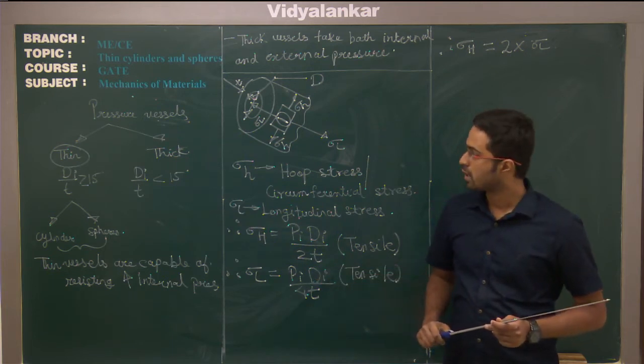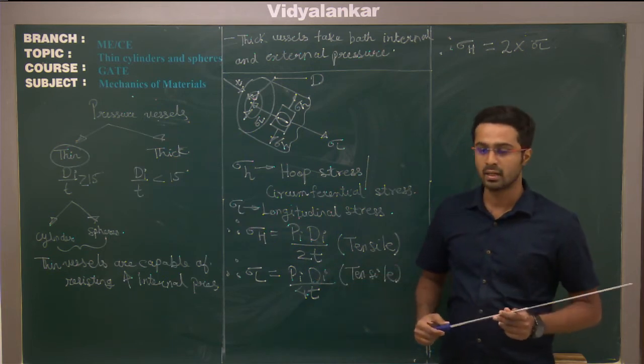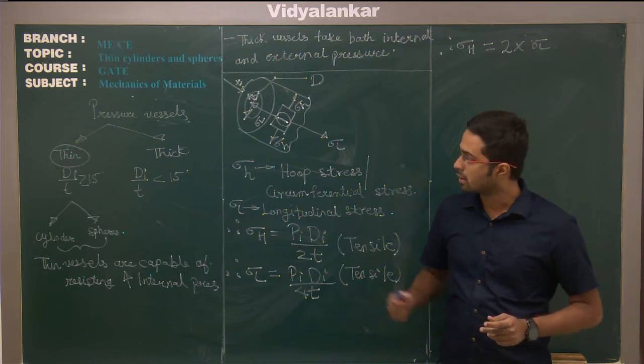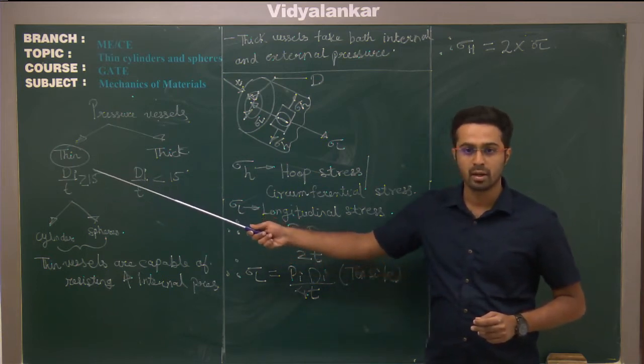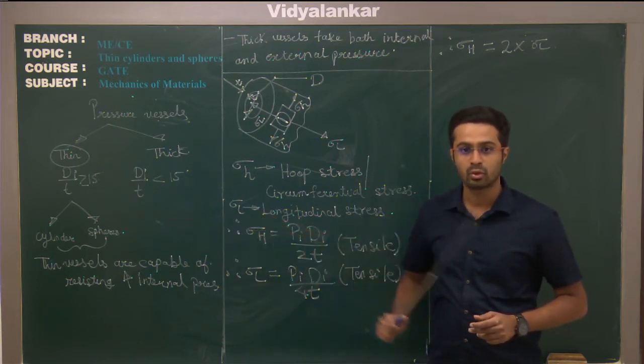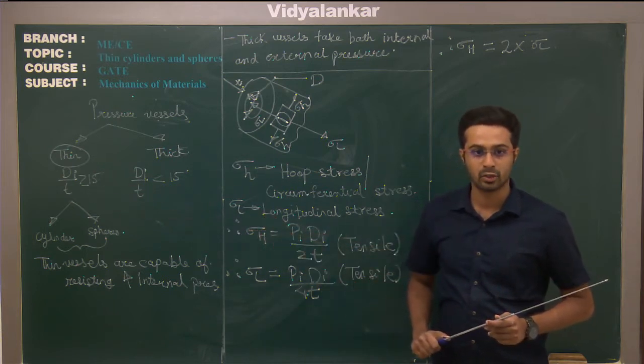And if the internal diameter to thickness ratio is less than 15, it is a thick pressure vessel. The criteria to decide thin and thick depends upon the internal diameter to thickness ratio.